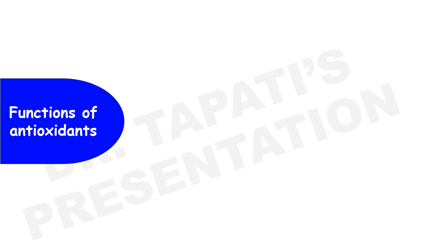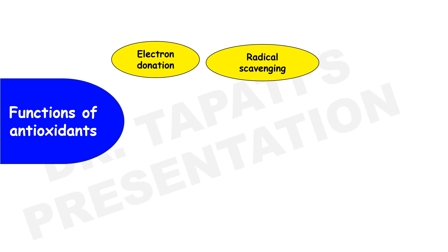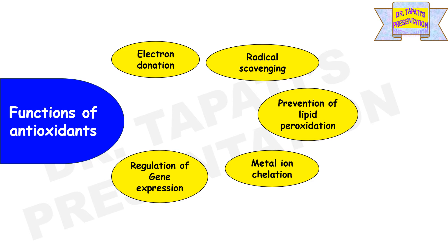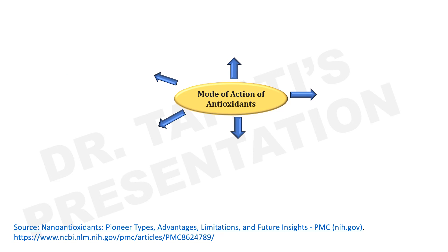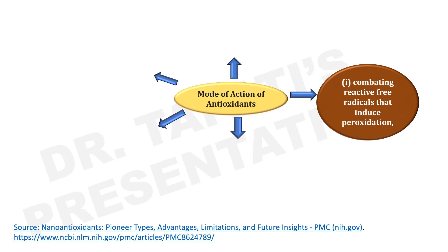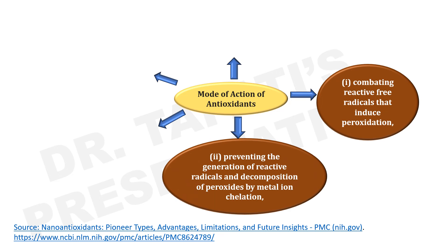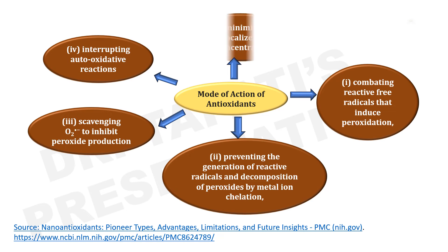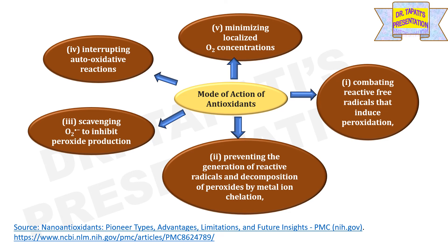Antioxidants may provide their defensive action on biological systems at different levels including electron donation, radical scavenging, prevention of lipid peroxidation, metal ion chelation, and regulation of gene expression. Various modes of action include combating reactive free radicals that induce peroxidation, preventing the generation of reactive radicals and decomposition of peroxides by metal ion chelation, scavenging peroxides and peroxide radicals to inhibit peroxide production, interrupting auto-oxidation reactions, and minimizing localized oxygen concentrations.